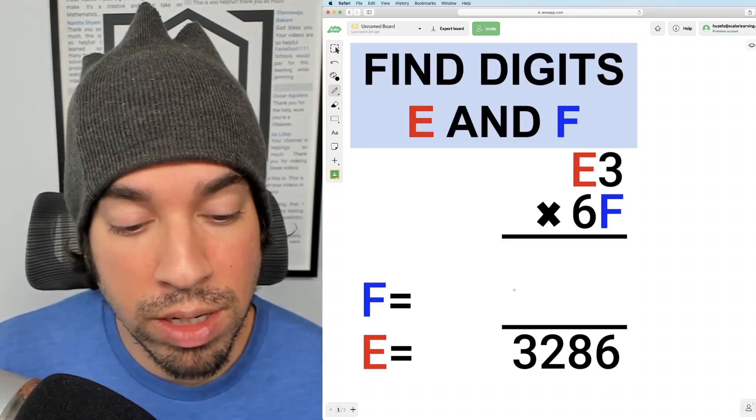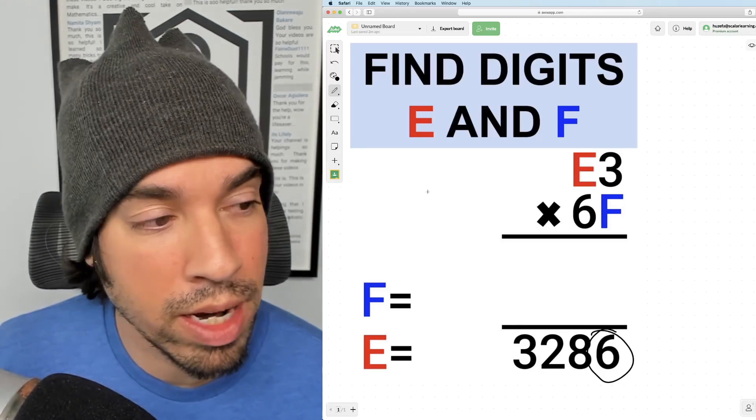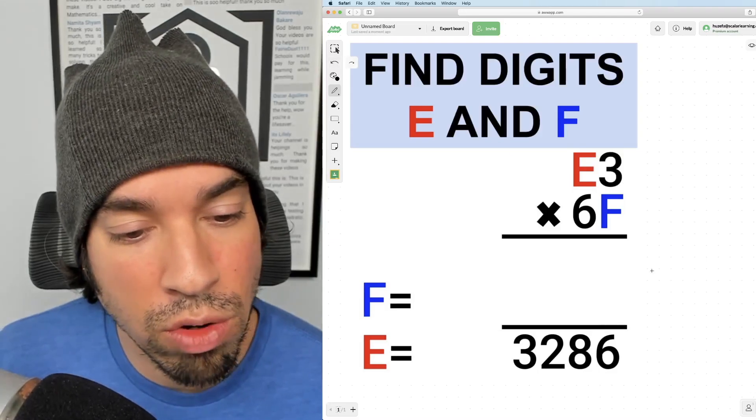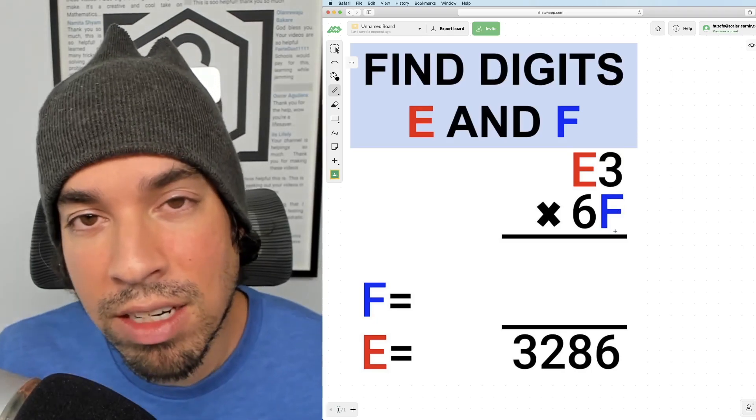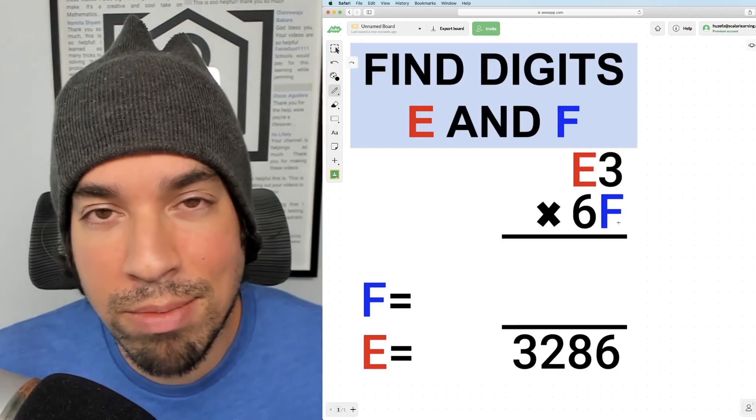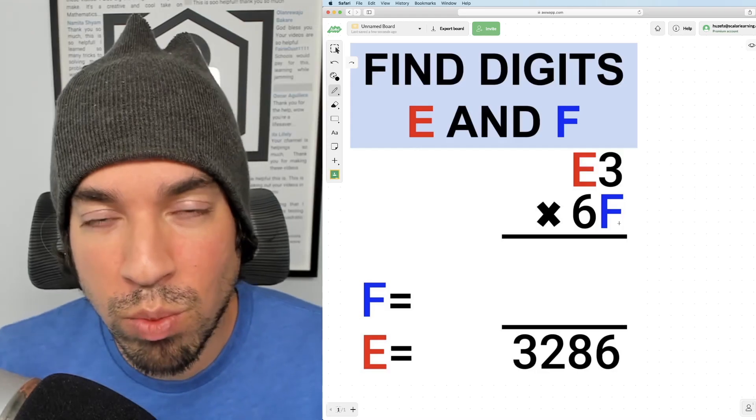So the easiest access point is looking at this 6 right here. The reason why that 6 is so important is because it can only come from F multiplying 3. That's going to be in the ones place. Everything else is going to be in the tens, hundreds or thousands place when we multiply it out.